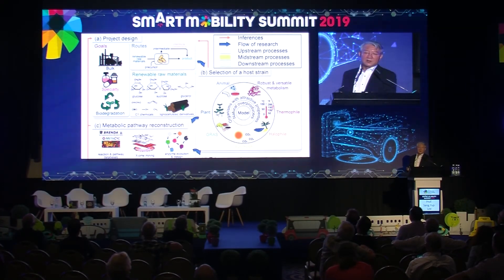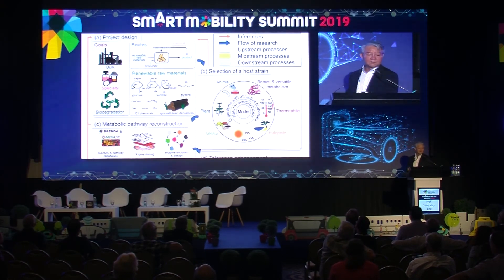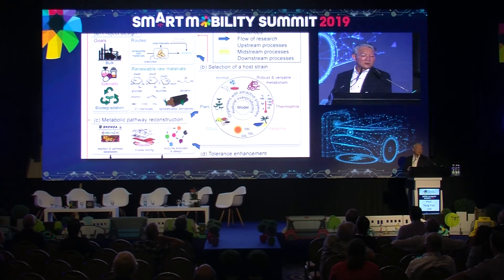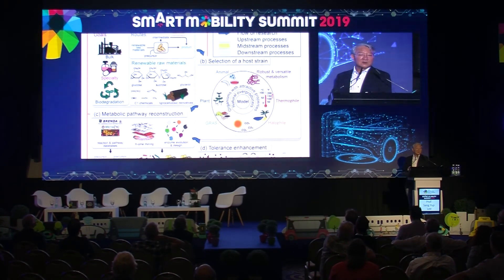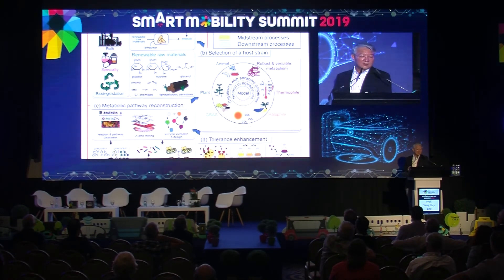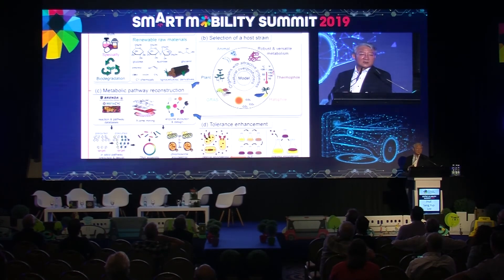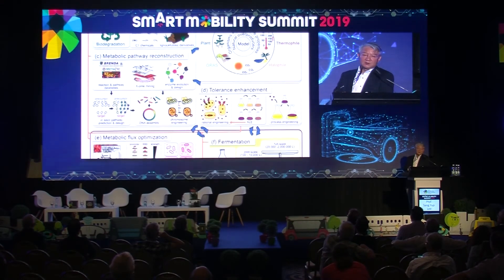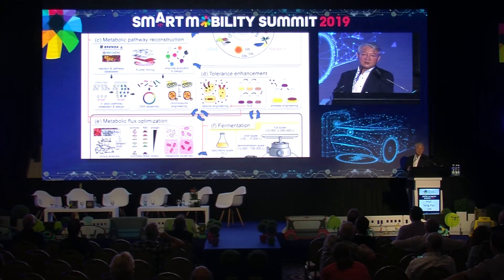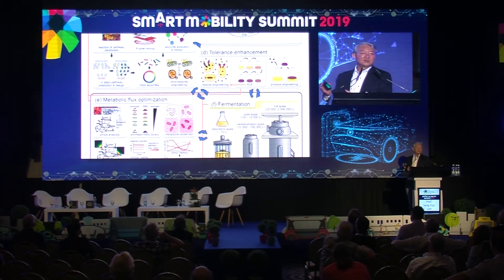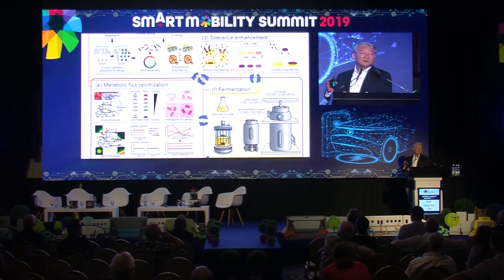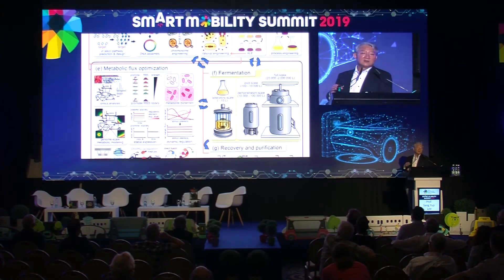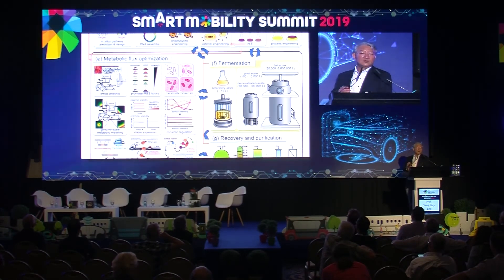My educational background is chemical engineering, so you always start with a project target — that is what you want to produce. You set the goal, then look for the most inexpensive carbon source. You select the host strain, which in my case is typically bacteria, but you can use yeast, fungi, or even plants. Then you reconstruct the metabolic pathway so that the desired chemical can be synthesized in cells, and you want to produce them in large amounts at high concentration with high productivity, so product tolerance should also be enhanced. This is the hardcore metabolic engineering step where you look at the cell in its entirety and design it using the many tools developed over the years.